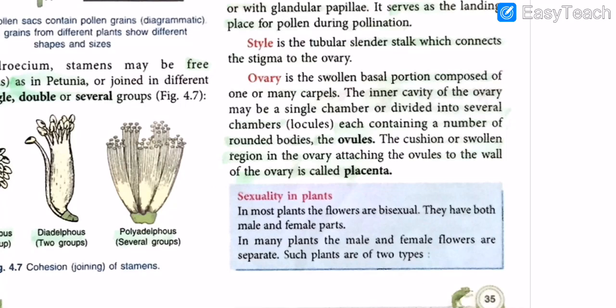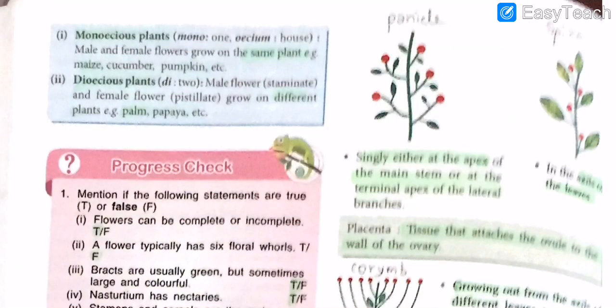In most plants, flowers are bisexual and have both male and female parts. In many plants, the female and male parts are separated, and such plants are of two types. The first type is monoecious — meaning 'one house' — where male and female flowers grow on the same plant. Examples include maize, cucumber, and pumpkin.